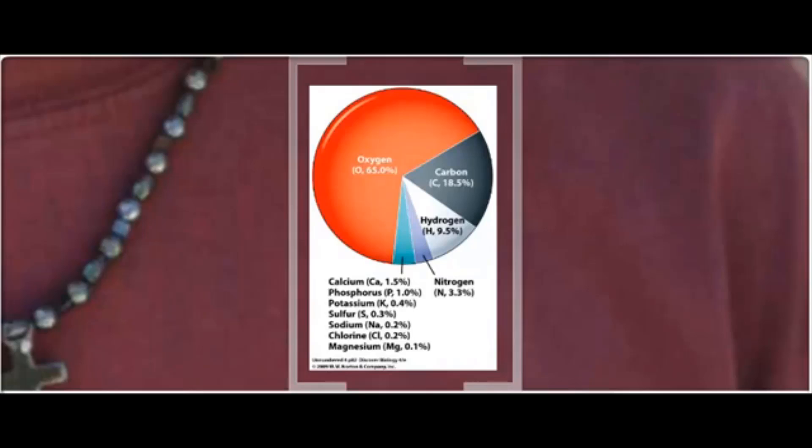along with calcium and phosphorus also contributing a percent or more each. Keep in mind this chart is looking at contributions to mass and not number of atoms. There are actually far more hydrogen atoms than there are oxygen atoms, but an oxygen atom is about 16 times heavier than a hydrogen atom.